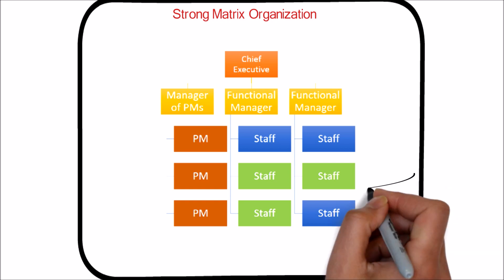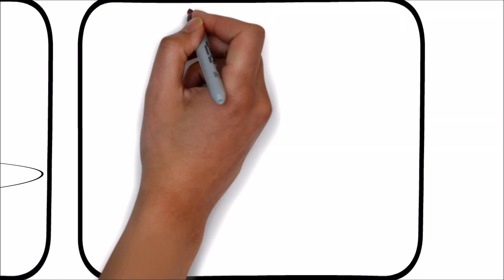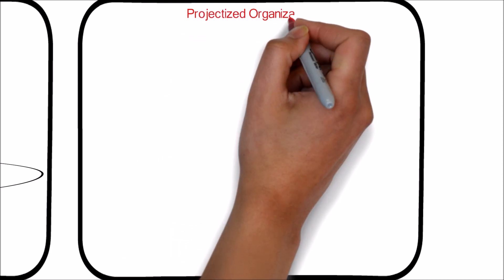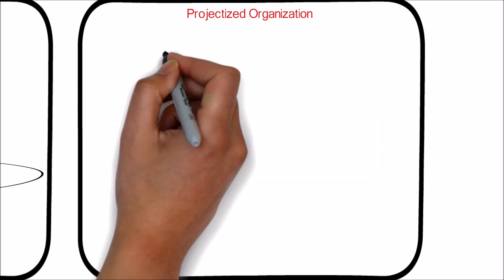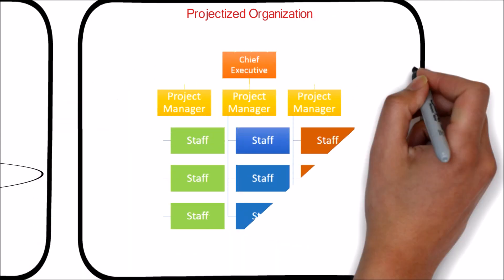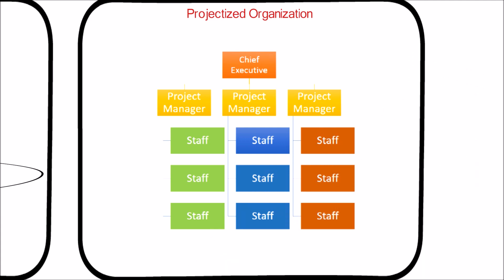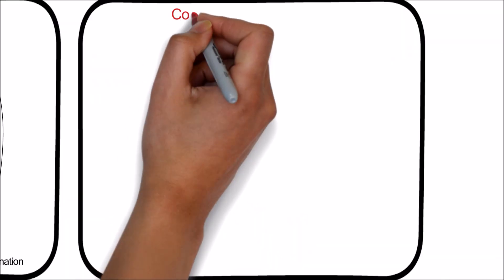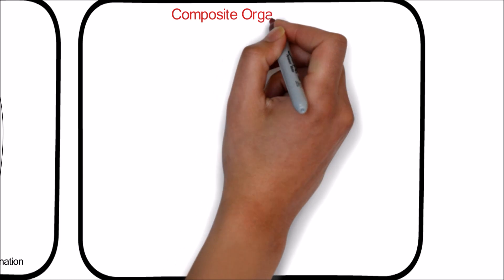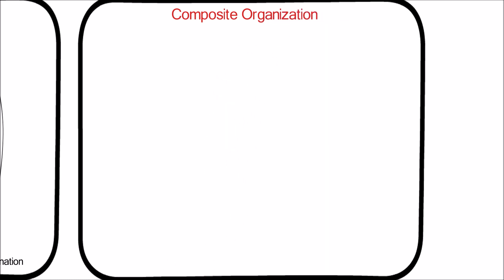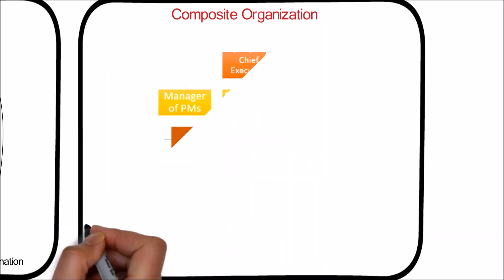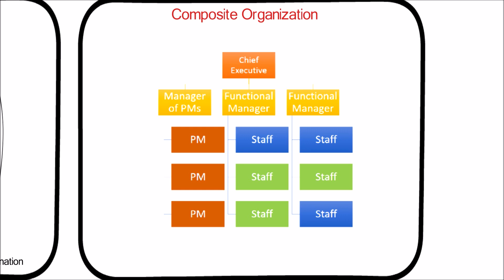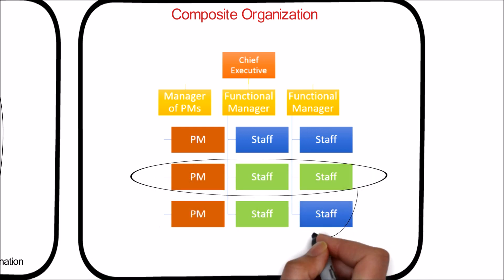At the opposite end of the spectrum to the functional organization is the projectized organization. In a projectized organization, team members are often co-located. Most of the organization's resources are involved in project work, and project managers have a great deal of independence and authority. Virtual collaboration techniques are often used to accomplish the benefits of co-located teams. Projectized organizations often have organizational units called departments, but they can either report directly to the project manager or provide support services to the various projects.